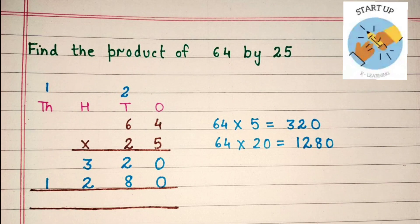Now, we will multiply 64 by 20. We are going to write a 0 at the 1's place because we are multiplying 64 by 20, and we cannot leave an empty place, so we will write a 0 here. 64 multiplied by 20 is equal to 1280. 2 multiplied by 4 is equal to 8. 2 multiplied by 6 is equal to 12. So, 320 and 1280 are the partial products here.